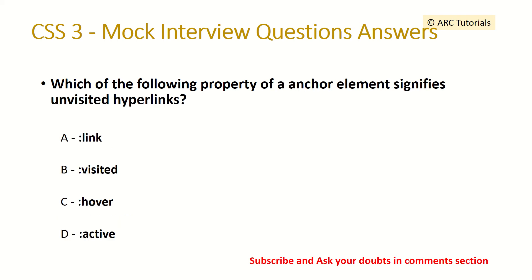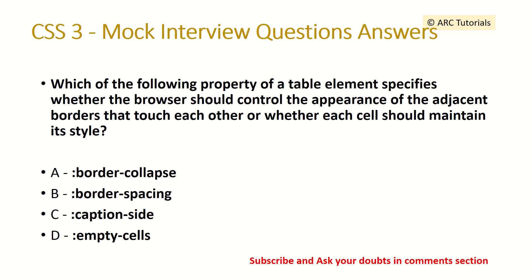The next question: which of the following property of an anchor element signifies unvisited hyperlinks? The options are pseudo-classes: :link, :visited, :hover, :active. The answer is :link. If you have visited the link it becomes :visited; if you hover on it it becomes :hover; if you are on the current active link it becomes :active.